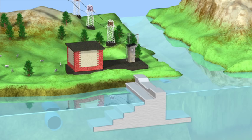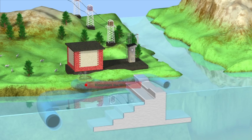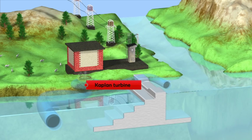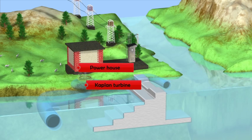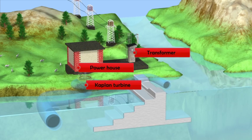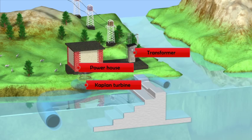The major components of the power plant are shown here. The powerhouse contains the generator and other machinery. Usually, a transformer is required to obtain a voltage suitable for power transfer over long distances with minimum loss.